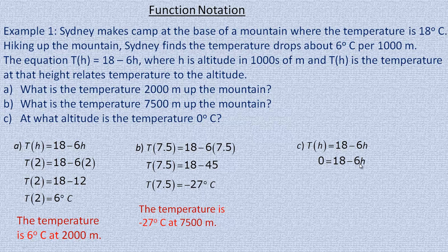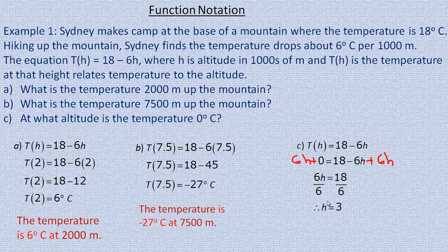We want to solve for h by isolating 6h. We add 6h to both sides to get the h by itself — always do the same thing to both sides. Those terms cancel, giving us 6h equals 18. Dividing both sides by 6, the 6s cancel and we get h equals 3, which represents 3,000 meters. So at 3,000 meters the temperature is 0 degrees Celsius.